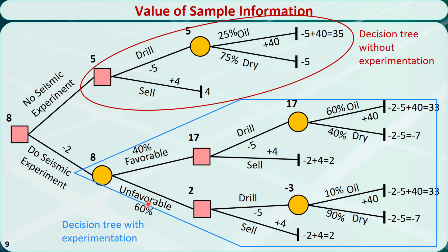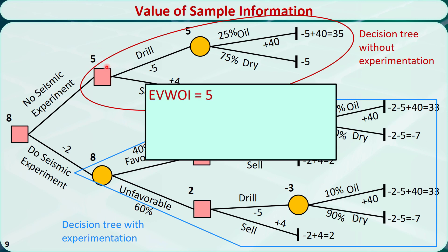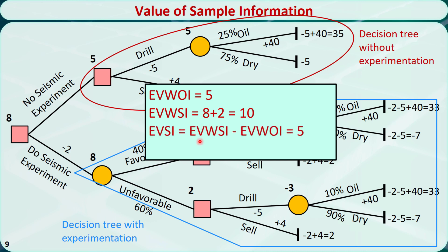In this example, the expected value with original information — the largest expected value without experimentation — is 5. The expected value with sample information, excluding the experimentation cost, is 8 + 2 = 10. The expected value of sample information is 10 − 5 = 5, which is greater than the real testing cost of 2. So the testing is totally worth it.